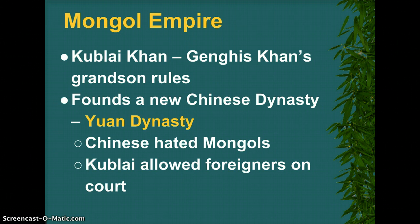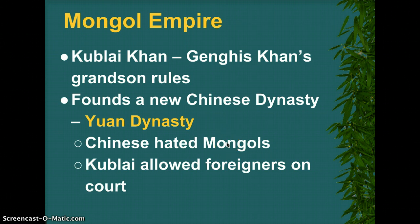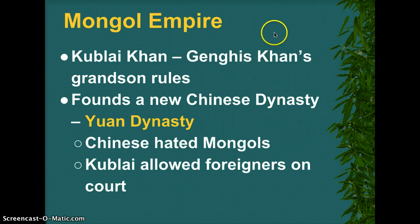We're still going through the dynastic cycles here, except that the Chinese hate the Mongols — obviously, they're invaders from outside. And that's in part why they built the Great Wall, because they wanted to stop the Mongol invasions.